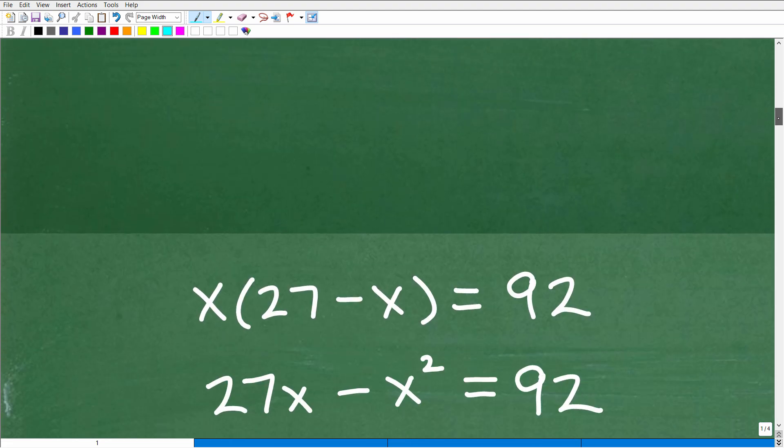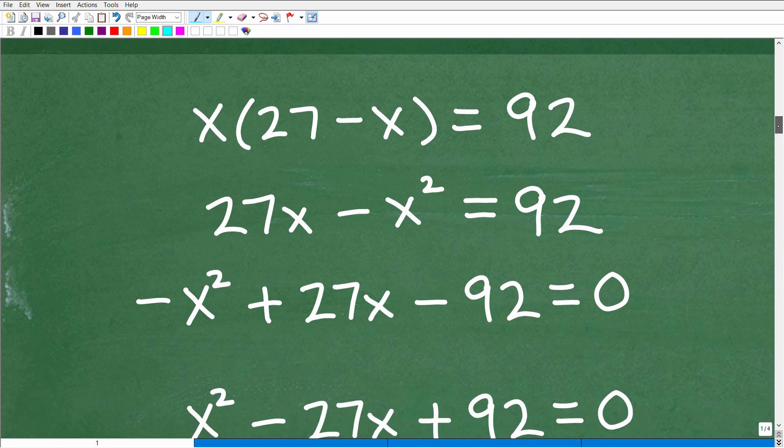Now, all right, so here we have X times 27 minus X equals 92. So what do we need to do? Well, first thing is we've got to distribute this X into 27 and minus X. We're going to end up with 27X minus X squared is equal to 92.